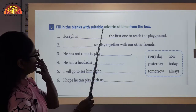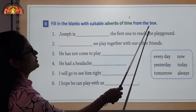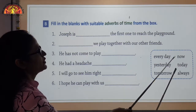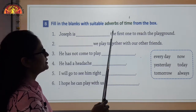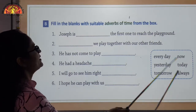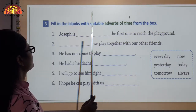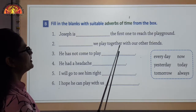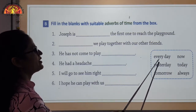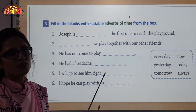Let us see Exercise B, which is for adverb of time. Fill in the blanks with a suitable adverb of time from the box. For example: Joseph is dash the first one to reach the playground — the answer is always. Dash, we play together with our other friends — the answer is every day. Rest of the sentences you will do on your own.